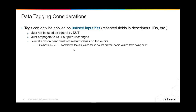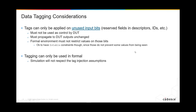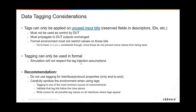Restricting those bits would deviate from what the design behavior would be. It's okay to have stability constraints because that allows all values to be seen without preventing values. Tagging only makes sense in formal — simulation will not respect any of those assumptions, because in simulation assumptions mean nothing. In fact, in the Cadence simulator, assumptions are converted to asserts, which will cause failures for no good reason.